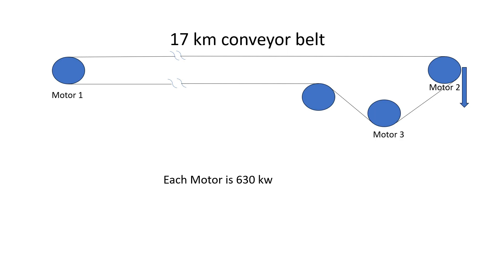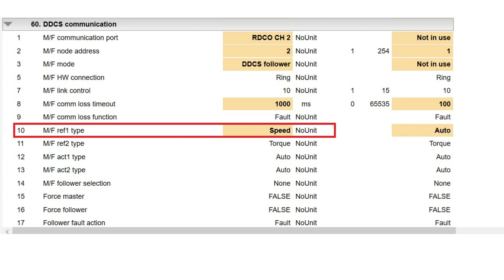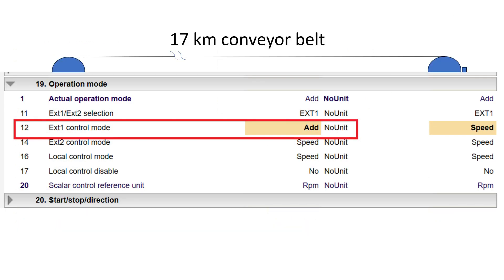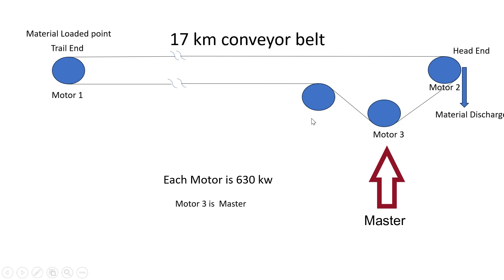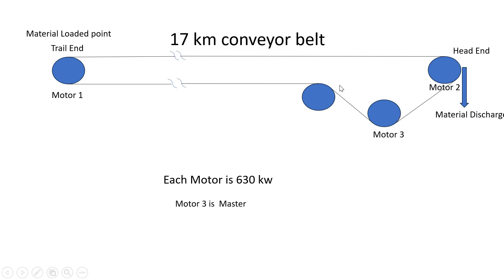Add mode is the mode that runs by both speed plus torque control combined. In Master-Follower mode — whether torque, speed, or add — in all cases the speed set point comes from the DCS to only one motor, which is called the Master. The Master motor shares the speed to the others. Here our master is Motor 3, and Motor 1 and Motor 2 are in Follower mode. Speed comes from the DCS to Motor 3, which then distributes torque and speed to Motor 2 and Motor 1.